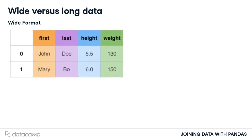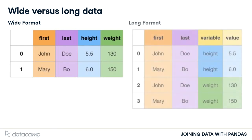Sometimes we will come across data where every row relates to one subject, and each column has different information about an attribute of that subject. Data formatted in this way is often called wide. There are other times when the information about one subject is found over many rows, and each row has one attribute about that subject. Data formatted in this way is often called long or tall. In general, wide formatted data is easier to read by people than long formatted.